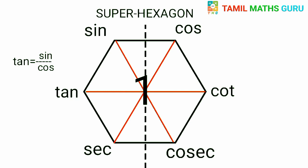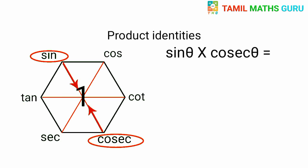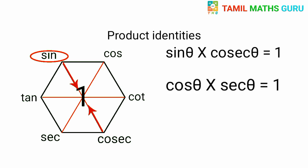First, sinθ multiplied by cosecθ is equal to 1. Next, that is the next identity. cosθ multiplied by secθ is equal to 1. The remaining one is also 1.